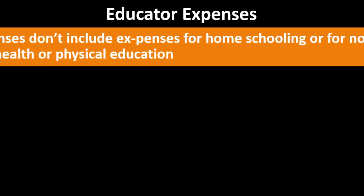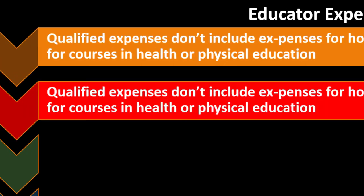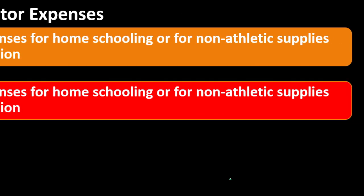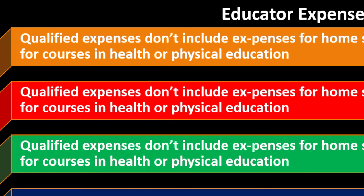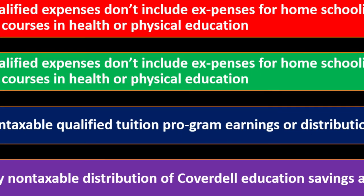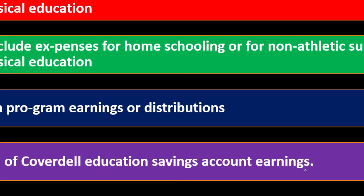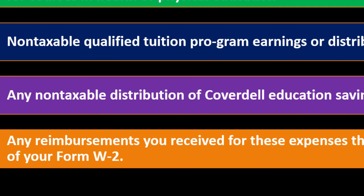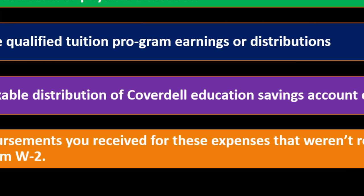Qualified expenses do not include expenses for homeschooling or for non-athletic supplies for courses in health or physical education. They also exclude non-taxable qualified tuition program earnings or distributions, any non-taxable distributions of Coverdell Education Savings Account earnings, and any reimbursements you received for these expenses that were not reported to you in box one of your Form W-2.